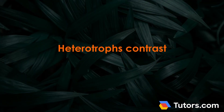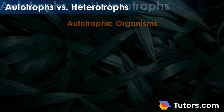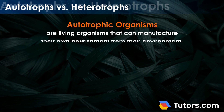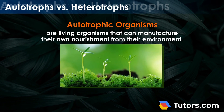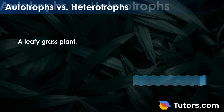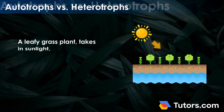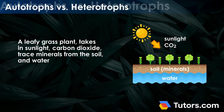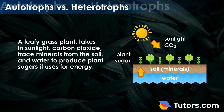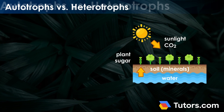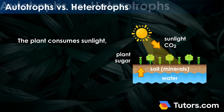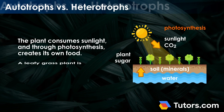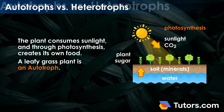Heterotrophs contrast with autotrophs. Autotrophic organisms are living organisms that can manufacture their own nourishment from their environment. A leafy grass plant takes in sunlight, carbon dioxide, trace minerals from the soil, and water to produce plant sugars it uses for energy. The plant consumes sunlight and through photosynthesis creates its own food, making it an autotroph.